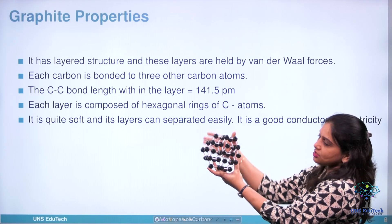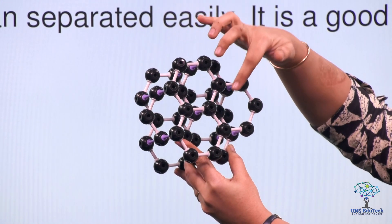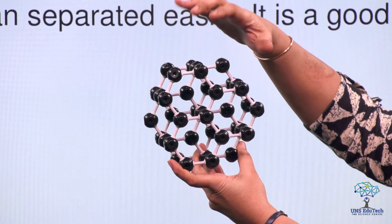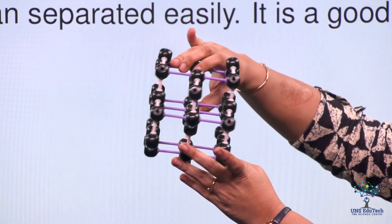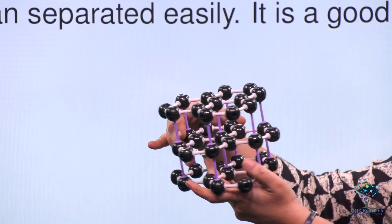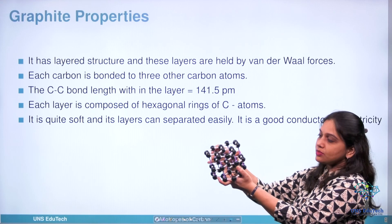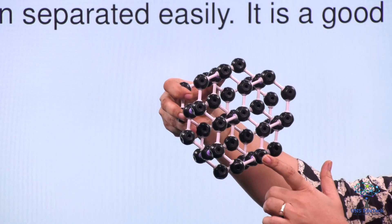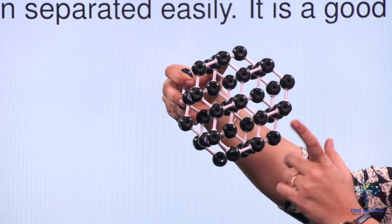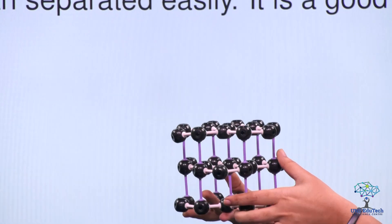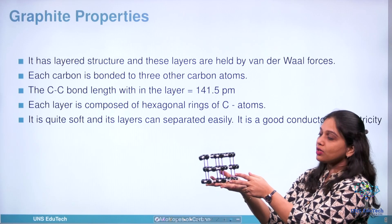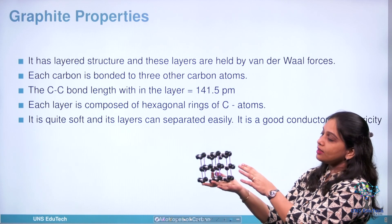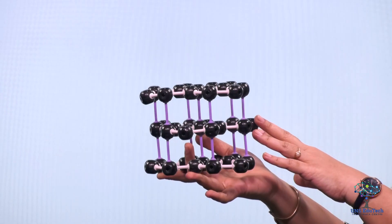Looking at the structure from the front, the carbon atom is bonded with 3 other carbon atoms where only 3 valence electrons are utilized in bonding. One more electron is a non-bonded electron, which is responsible for the conductivity of electricity. In diamond all 4 electrons are bonded, while in graphite each carbon bonds with only 3 other carbon atoms and one electron is left over. That is why graphite is a good conductor of electricity while diamond is not.